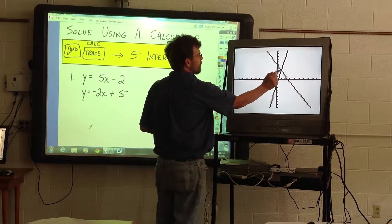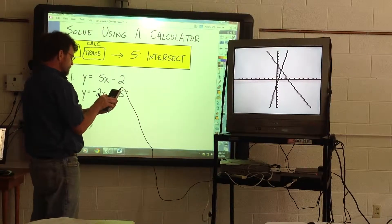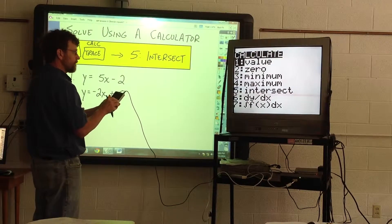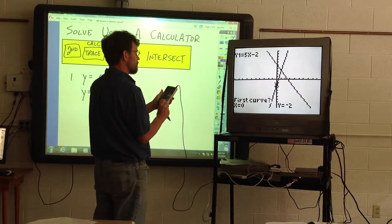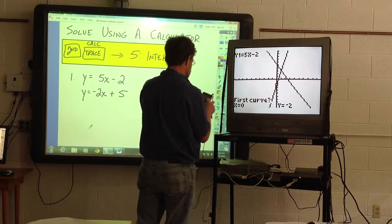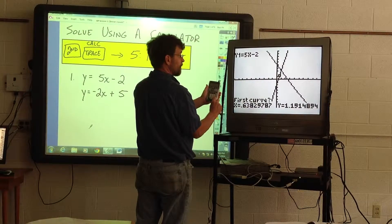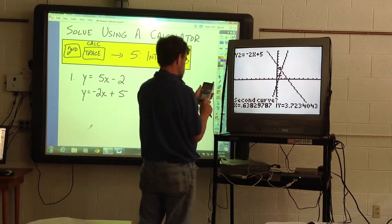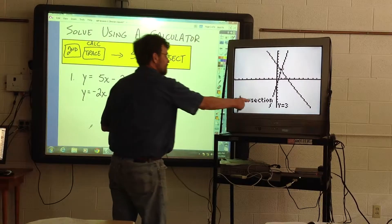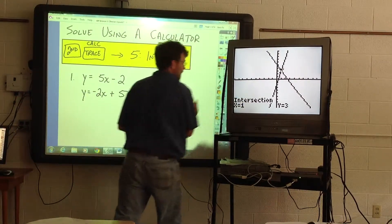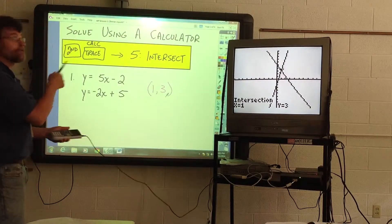And it should graph both of these on here, and so we want to find what the coordinates of this intersection is of these two lines. So I'm going to hit second, trace, intersect, and first curve, you can see the cursor here, if you move it around, that's on that line. Just hit enter, and then it moves into the second curve, hit enter, and guess, you can just hit enter again, and it says the intersection is at X equal 1, Y equal 3. So that is the solution to this system.